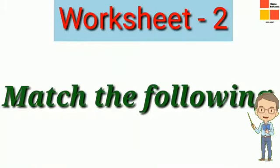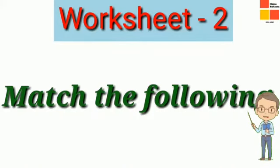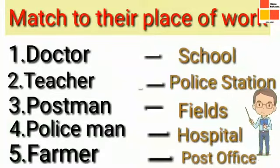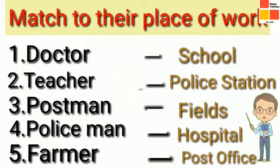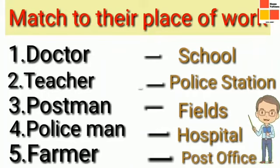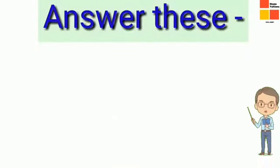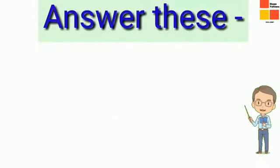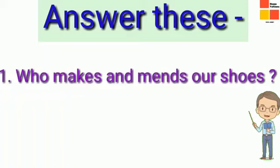Now let's do the matching from right to left. This is worksheet two and you can take it as your homework. The left side has: doctor, teacher, postman, policeman, farmer. The right side has: school, police station, fields, hospital, post office. Pause the video, write all the answers in your copy, and send it to me — I will check it. It's very easy and interesting homework.